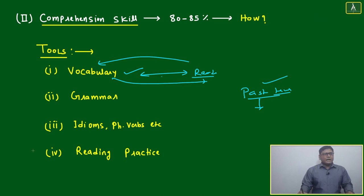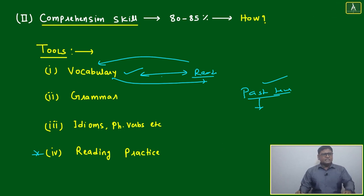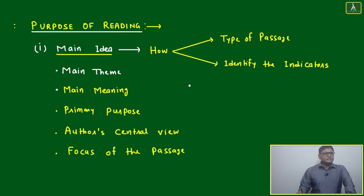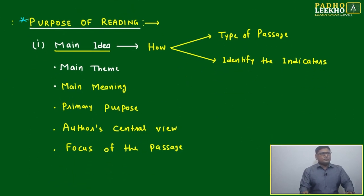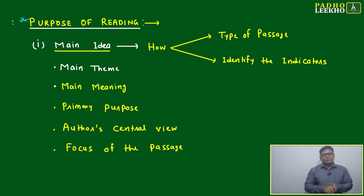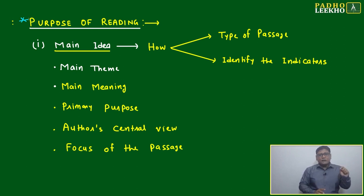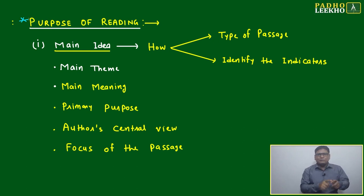Next are idioms, phrasal verbs, etc., and most important is reading practice — that is vital. These four tools we will use to improve comprehension skills. Now, most important to apply immediately: purpose of reading. Don't confuse — it is not why we should read. Purpose of reading means: you understand what you are reading, why you are reading it, and how to read it. You are preparing for CAT — why is reading important? Everything you understood.